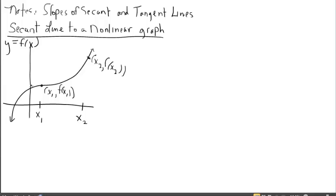You can also look at the y-values along the y-axis over here. If I were to take this ordered pair and extend it over to the y-axis, this placement would be f evaluated at x sub 1. So just trying to get used to the different kinds of notation we might use in this course — f evaluated at x sub 2. We're considering a secant line to a non-linear graph, which is what we have before us.